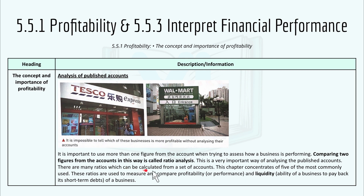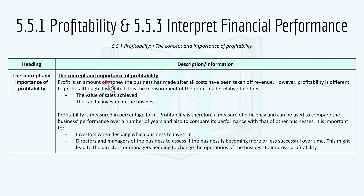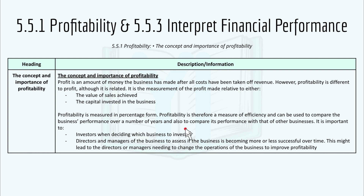There are many ratios which can be calculated from a set of accounts. This chapter concentrates on five of the most commonly used, which measure and compare the profitability of performance and liquidity — the ability of a business to pay back its short-term debt. Profit is an amount of money that the business has made after all costs have been taken off revenue. However, profitability is different to profit. It is a measurement of the profit made relative to the value of sales achieved or the capital invested in the business. Profitability is measured in percentage form and is a measure of efficiency, used to compare business performance over a number of years and with other businesses.